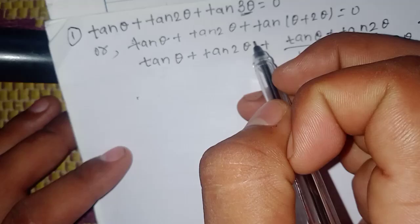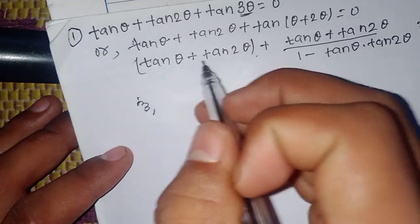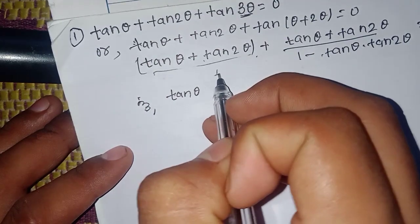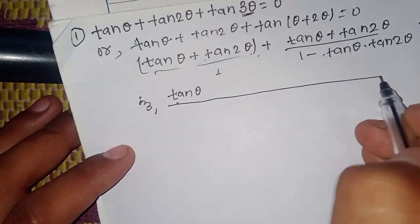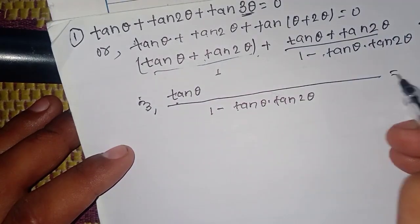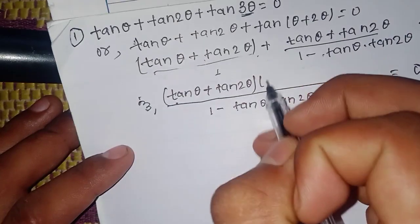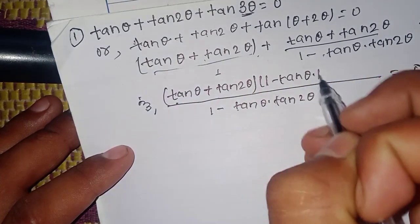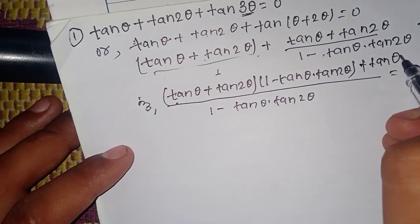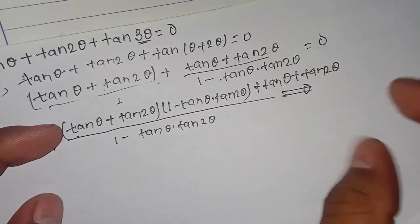Taking the LCM, we get one minus tan(theta) into tan(2-theta) equal to zero, plus tan(2-theta). So one minus tan(theta) into tan(2-theta) is the denominator term, and tan(theta) plus tan(2-theta) is in the numerator.